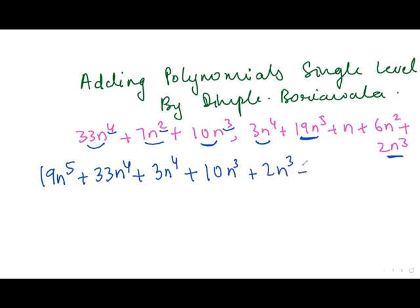Then comes N square. So I will go N square. Yes, there is another N square. And then comes only degree 1, so that is only N. I will write it like this.